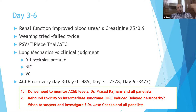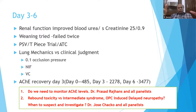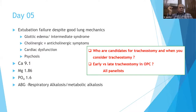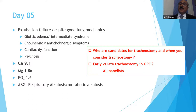When to consider tracheostomy in OPC patients: Dr. Prashant says most patients with good supportive care and atropinization are ready to extubate by day two to four. For intermediate syndrome patients — where deep tendon reflexes are decreasing, proximal muscle weakness and cranial nerve abnormalities appear, typically from day two to day six — tracheostomy is decided because recovery can take two to three weeks.